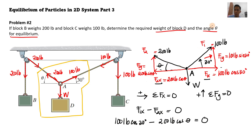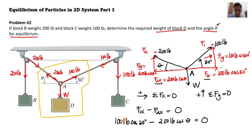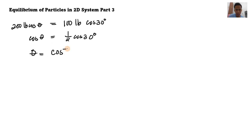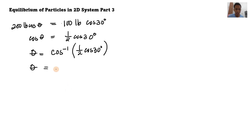From this equation, we can compute angle theta for equilibrium. So 200 pounds cosine theta equals 100 pounds cosine 30 degrees. Dividing both sides by 200 pounds: cosine theta equals one half cosine 30 degrees. Therefore theta equals arc cosine of (one half cosine 30 degrees). Make sure your calculator is in degrees mode. Our angle is 64.34 degrees for equilibrium.